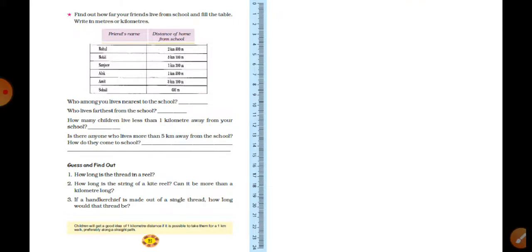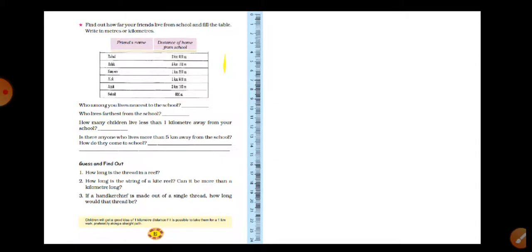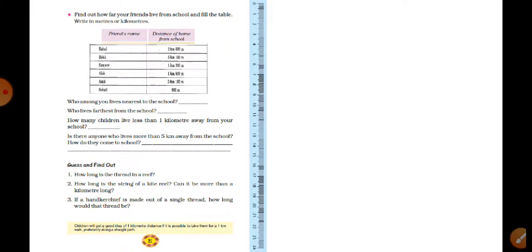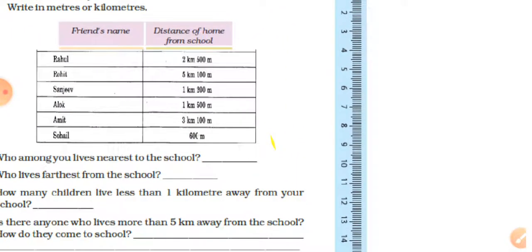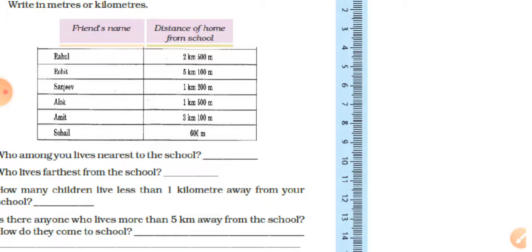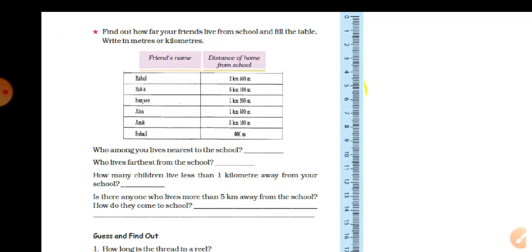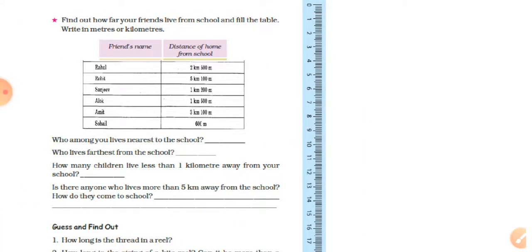Next question: find out how far your friends live from your school and fill in the table — write the meters and kilometers. I have given some examples here. For example, Rahul is 2,500 meters. You can write it in your own numbers. You can write the names of your friends, the distance from school, and calculate the distances.